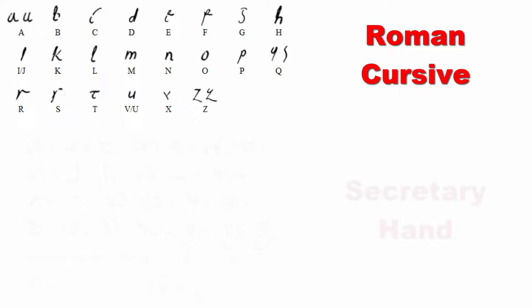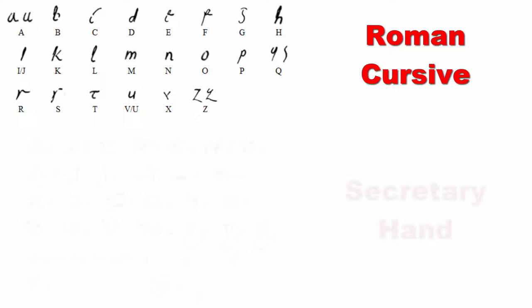There are different handwriting styles as well. For example, Roman cursive was used in the Roman Empire and in the Middle Ages. Secretary hand came into use starting from the 13th century, and was common in the 16th and 17th centuries for writing English, German, Welsh, and Gaelic.